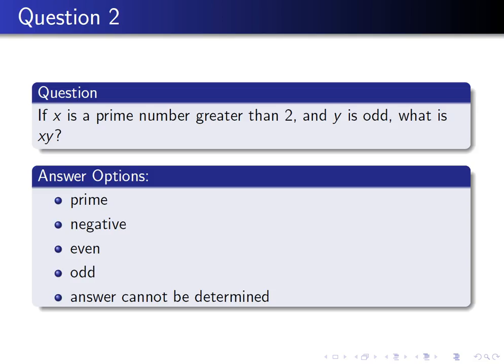Let's try another question. If X is a prime number greater than 2 and Y is odd, what is X times Y? A prime number is one that cannot be divided with a whole number answer by anything other than 1 and itself.